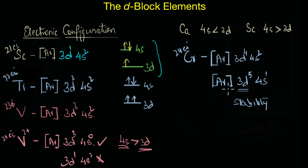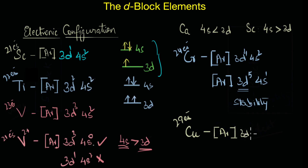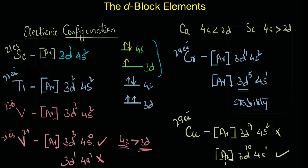From manganese, we again see similar expected filling of electrons until we reach copper. Copper has 29 electrons, and unlike what we might expect — [Ar]3d⁹4s² — the actual configuration is [Ar]3d¹⁰4s¹, featuring a completely filled 3d subshell and a half-filled 4s subshell. Here, the reasoning is based on the extra stability of fully filled d orbitals.